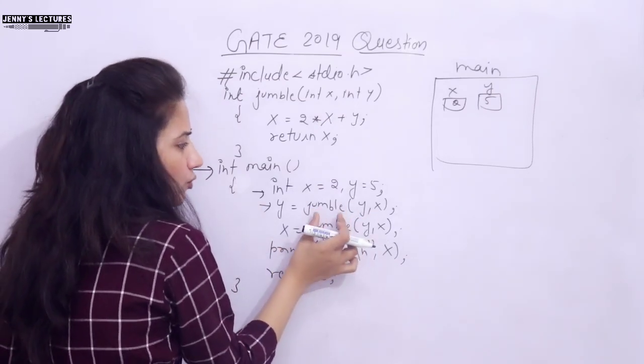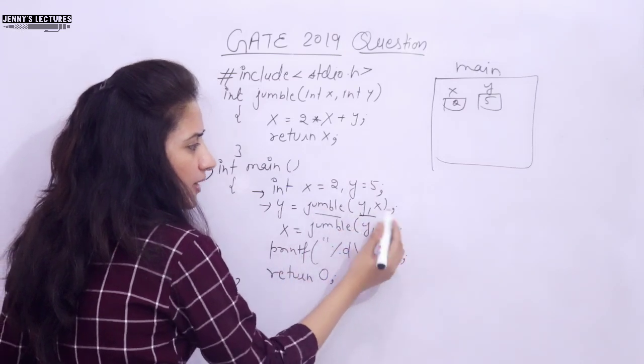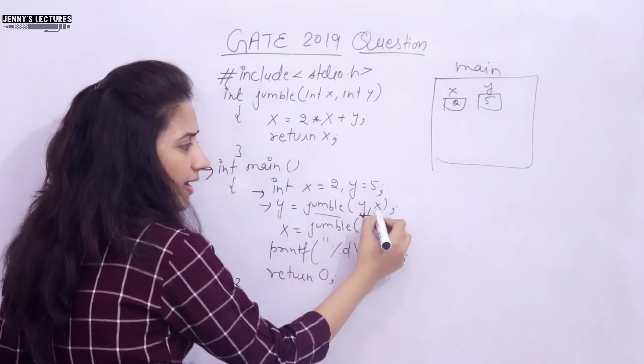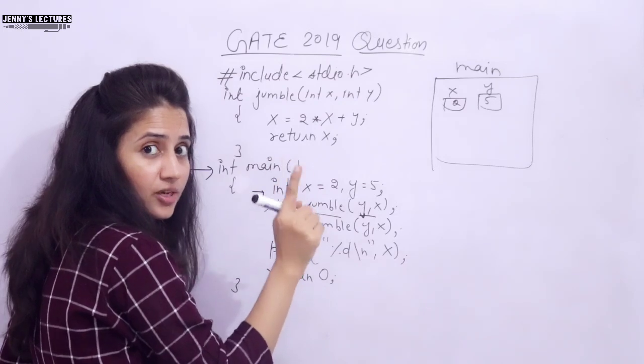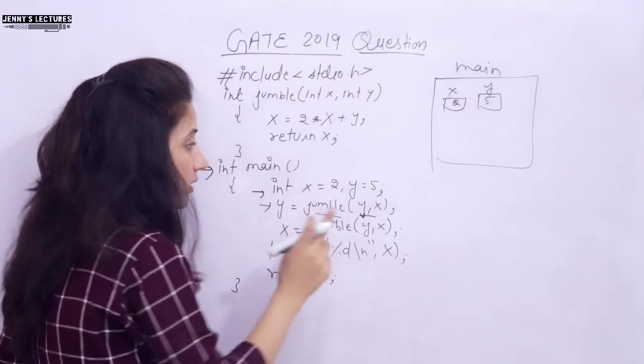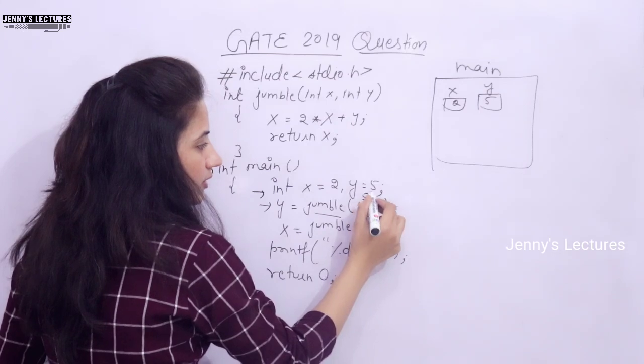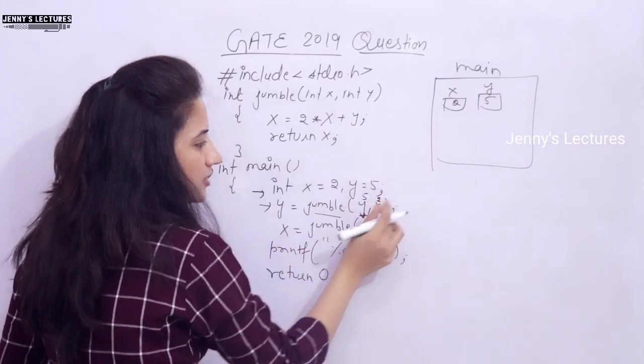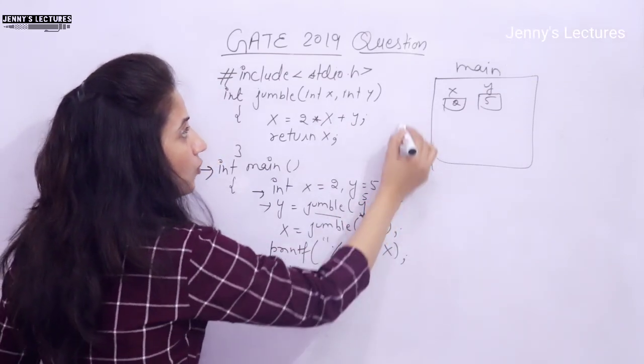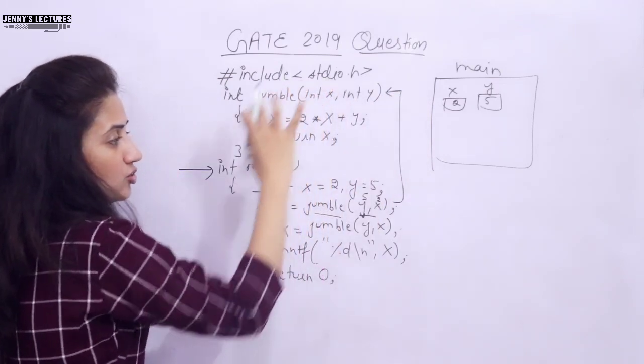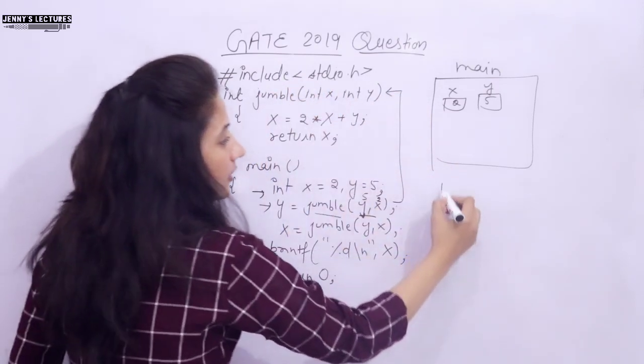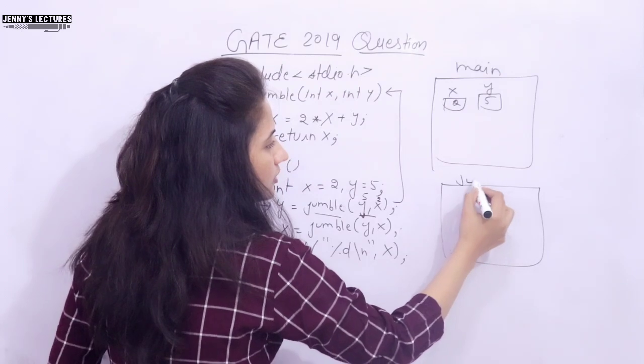Now it is what? Function calling. I am going to call this function jumble and what you are passing? y and x. Question is tricky, very simple but tricky. y value is 5 and x value is 2. So we are passing these two values. Now control will go where? Here is the definition of the function. Control will go here.